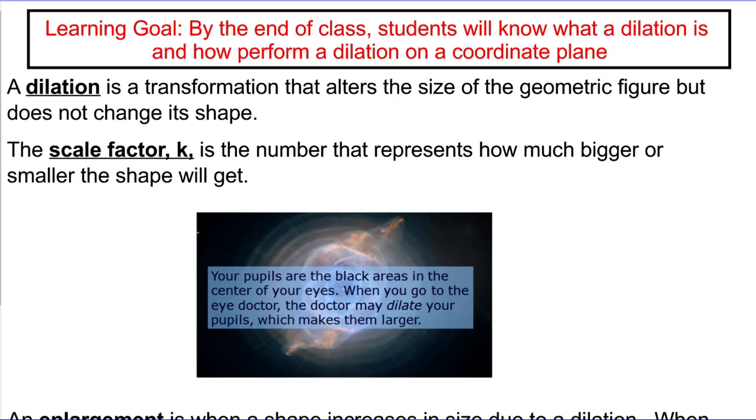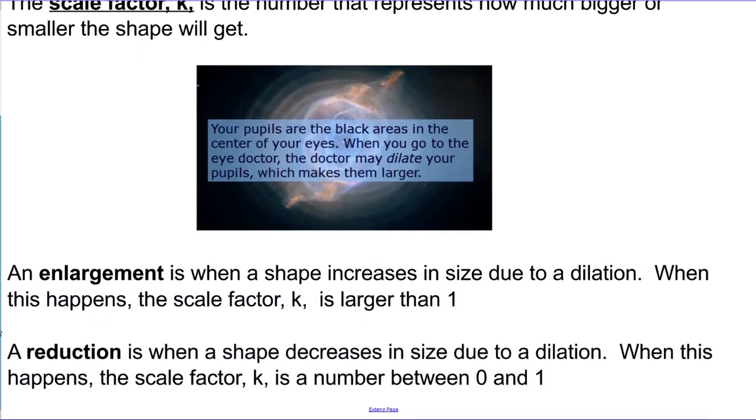So how big or how small that object gets is called the scale factor. And we usually use this letter K to represent the scale factor. So if you see K showing up, they're actually trying to represent with a number how much bigger or how much smaller your object is getting. So you can see an example. You've probably heard if you've ever been to the eye doctor about dilating your pupils. They're actually trying to take the size of your pupils and make them larger so they can see inside. And so that's really kind of a common example of it.